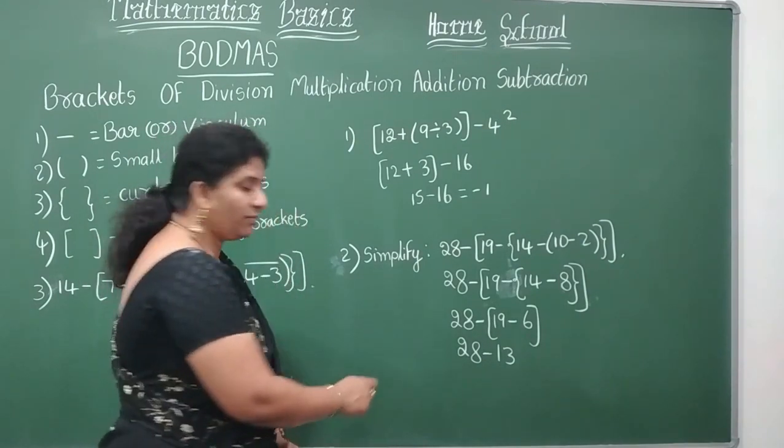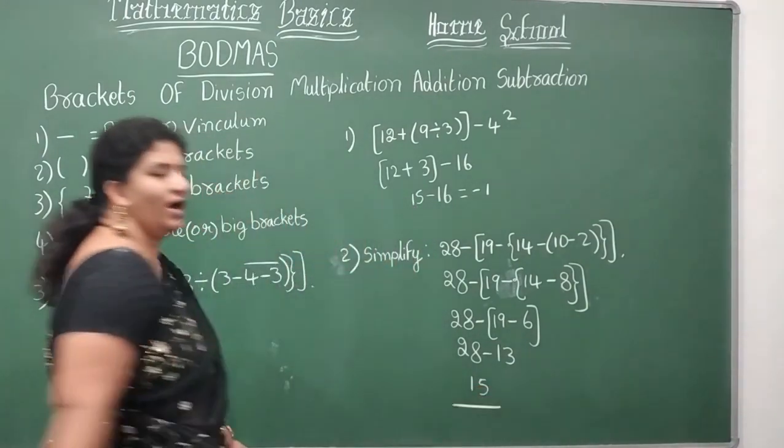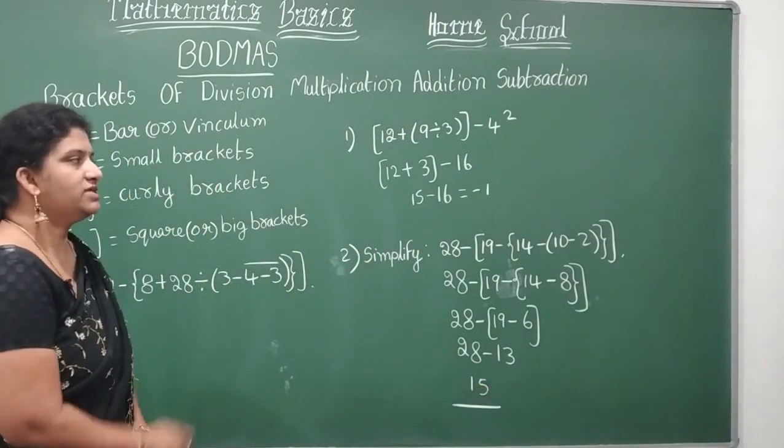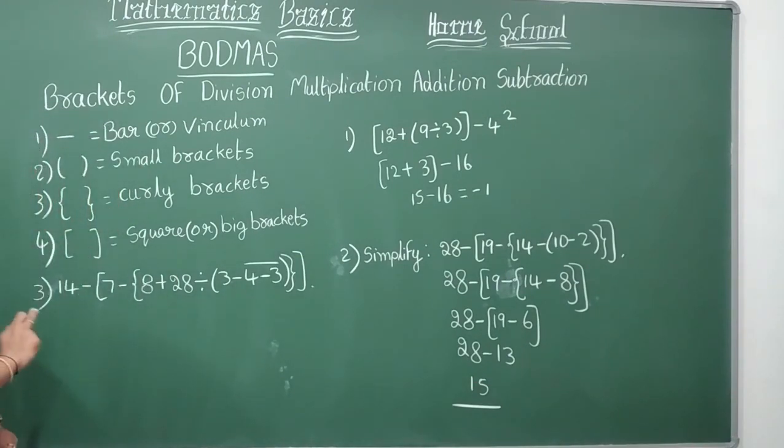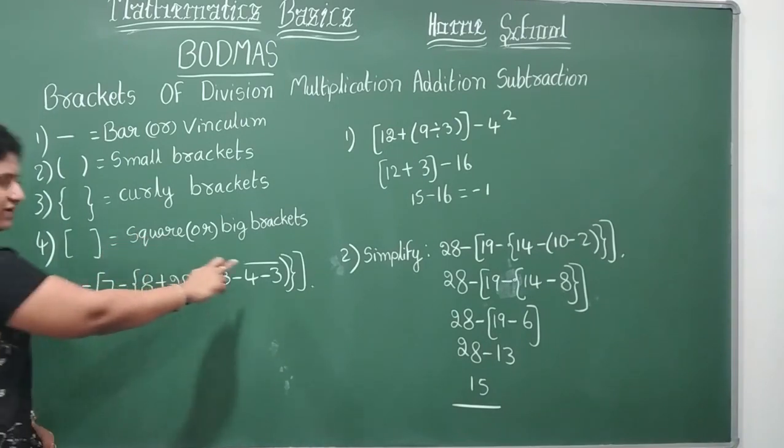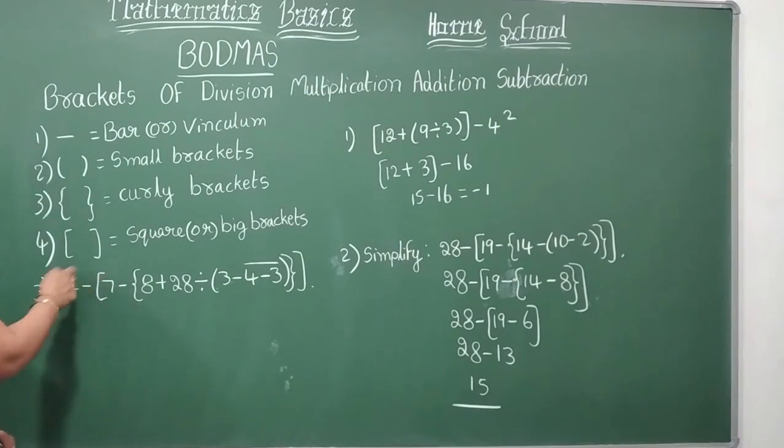Finally what do you have? See there I have subtraction. After completion of brackets go with the subtraction. 28 minus 13 will be 15 is your answer. Similarly we are going to solve one more example here.